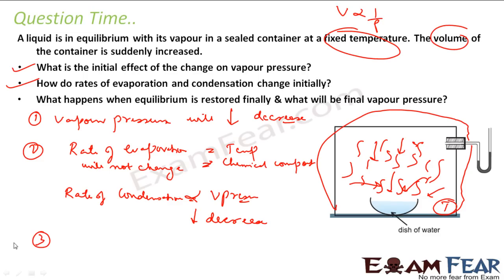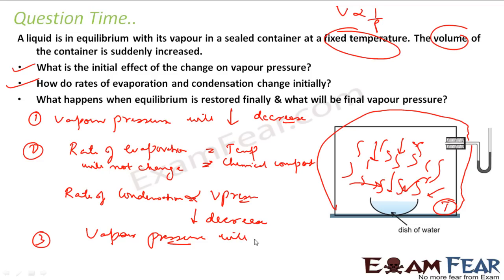Third: what happens when the equilibrium is finally restored and what will be the final vapor pressure? When the equilibrium is finally restored, the vapor pressure will be the same as before. Because vapor pressure at equilibrium is independent of the volume — whether you take a big volume or a small one, it does not matter. It is a property of the substance. So vapor pressure will be restored.